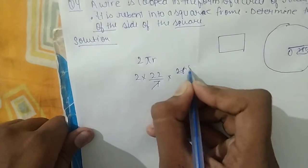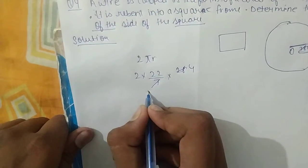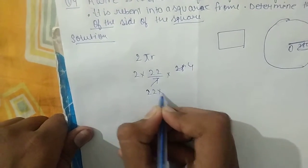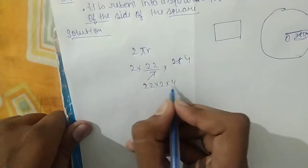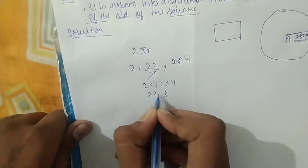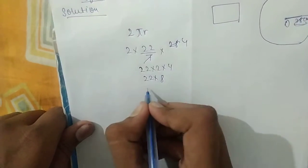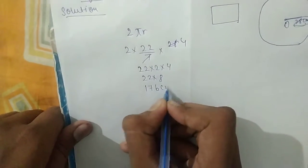Using 22/7 for π: 2 × 22/7 × 28. That's 22 into 2 into 4, 4 to 8, 22 into... now how much will it be? 176 cm.